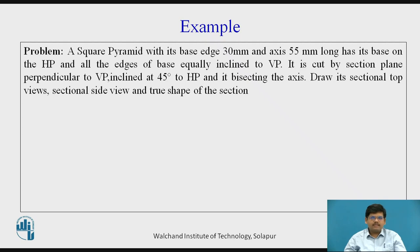Moving further with the example: we have a square pyramid with its base edge 30 mm and axis 55 mm long, with its base on HP and all the edges of the base equally inclined to VP. It is cut by a section plane perpendicular to VP, inclined at 45 degrees to HP and bisecting the axis. We have to draw its sectional top view, sectional side view, and true shape of the section.